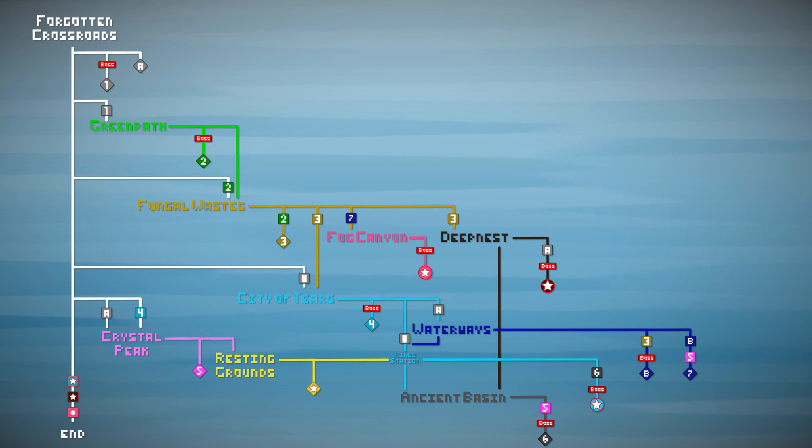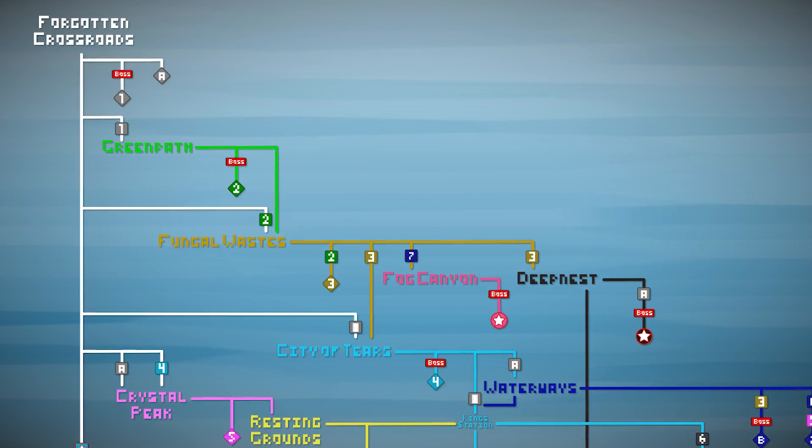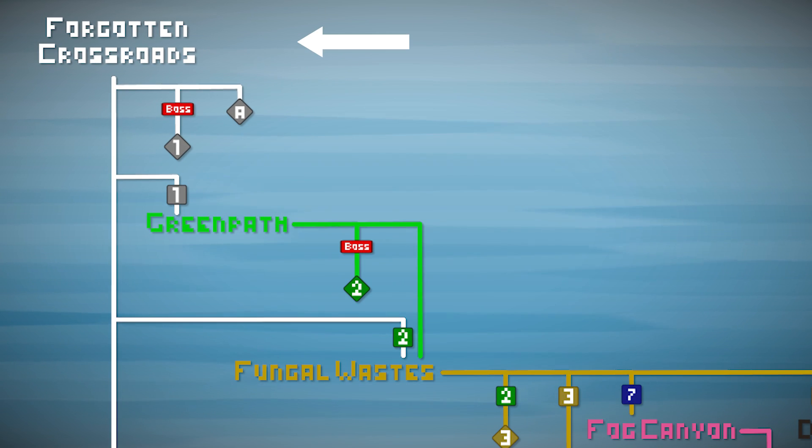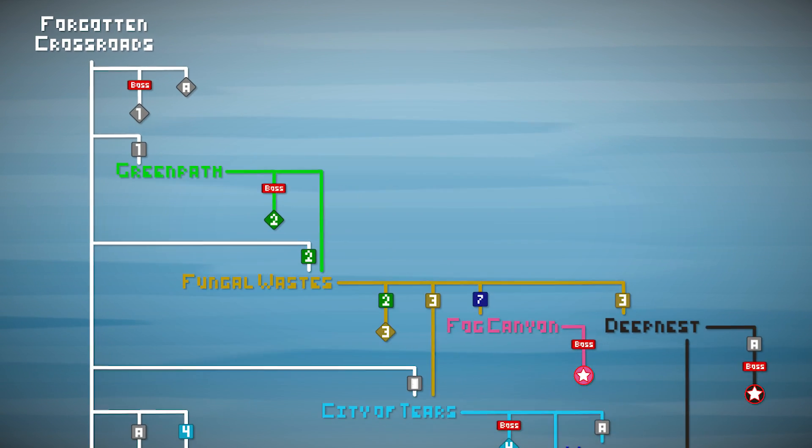So I think you can get a good idea of how complex our exploration through this game is going to be. You are constantly needing to use abilities found elsewhere in the game to pass obstacles. Probably the first few areas are the most straightforward, Forgotten Crossroads to Greenpath to Fungal Wastes. But as you go, more paths open up to you.